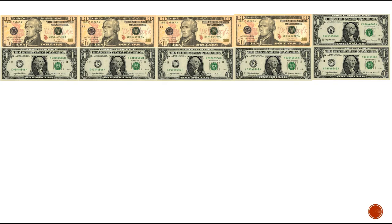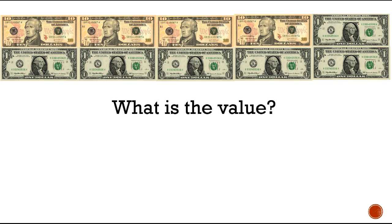All right, now we've got a mixture — we've got tens and we have ones. Let's count the tens first to find out the value: 10, 20, 30, 40. So let's put down that we have forty dollars here. Plus we have some one-dollar bills, so let's count how many one-dollar bills we have, counting by ones: 1, 2, 3, 4, 5, 6. So let's put down six dollars.